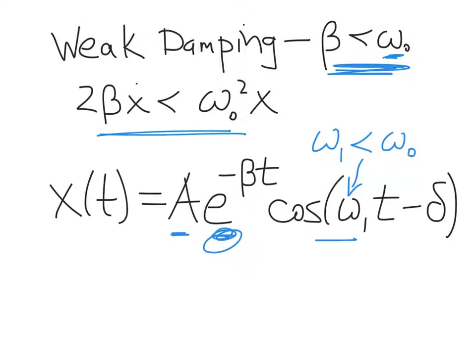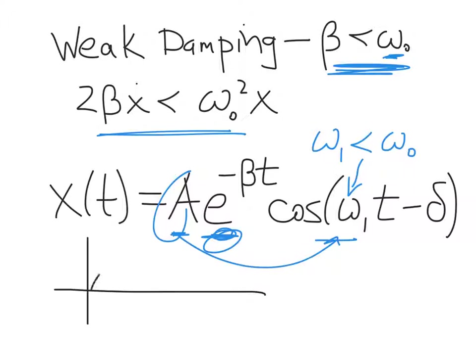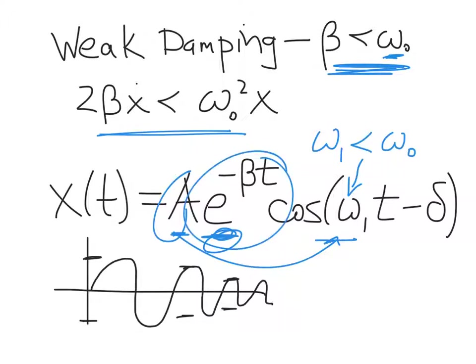The basic structure of this solution is simple to interpret: we have A times cosine — an oscillator — and on top of that, the damping term. What happens is you have a harmonic oscillator whose amplitude is constantly getting smaller and smaller. You get distinct oscillations, but their amplitudes decay with time because of the exponential term. In the case of weak damping, it resembles the undamped case — just an oscillator with amplitude decaying exponentially with time.